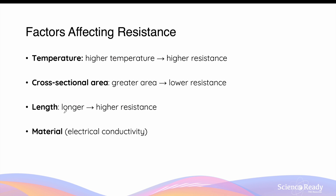In addition, a longer conductor also leads to higher resistance. This is because electrons traveling over a longer distance are much more likely to collide with atoms in the material. The collisions between atoms and electrons always slow down electron movement and therefore reduce the current. This is why transmitting current over a longer distance always results in higher resistance.